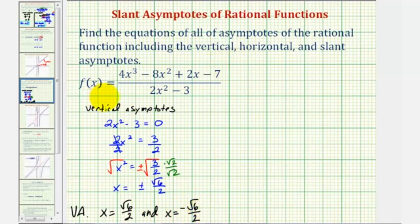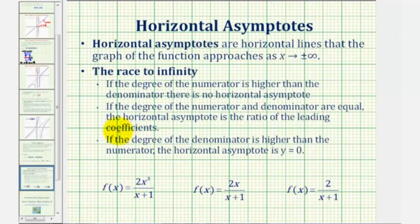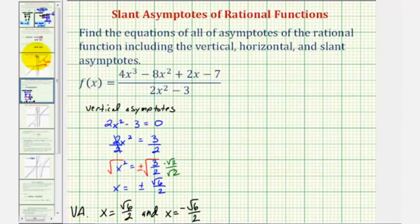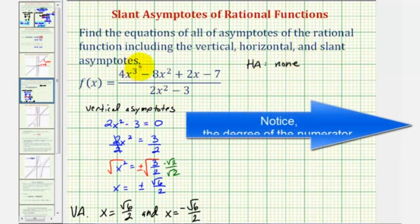Next we can determine the horizontal asymptote by analyzing the degree of the numerator and denominator. In this case, the degree of the numerator is three and the degree of the denominator is two. For a quick review: if the degree of the numerator is greater than the degree of the denominator, then we do not have a horizontal asymptote. If the degrees are equal, the horizontal asymptote equals the ratio of the leading coefficients. If the degree of the denominator is greater than the degree of the numerator, the horizontal asymptote is y equals zero. So in our case, we do not have a horizontal asymptote, but we do have a slant asymptote because the degree of the numerator is one degree higher than the degree of the denominator.